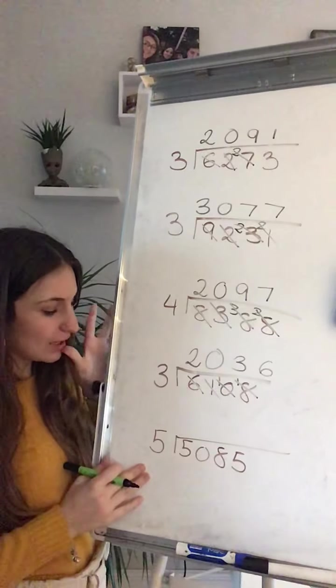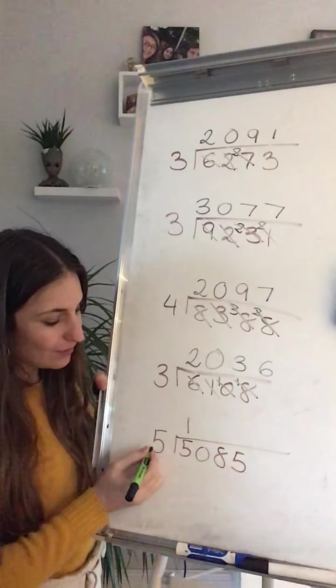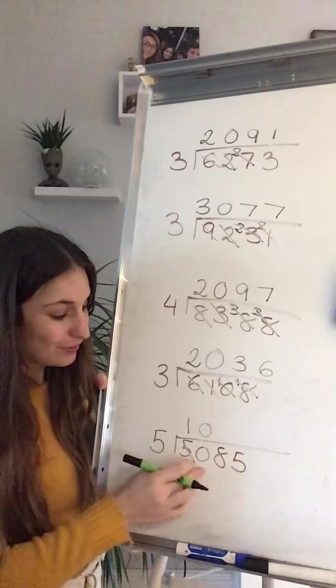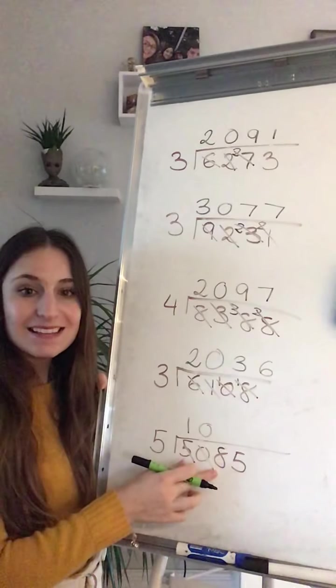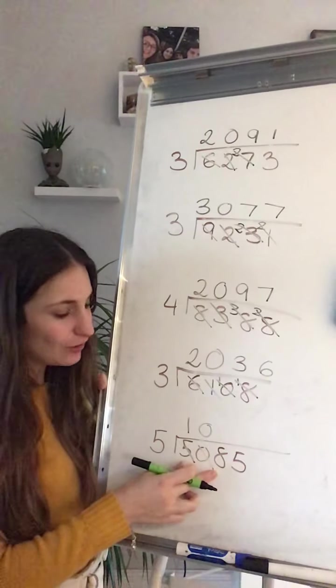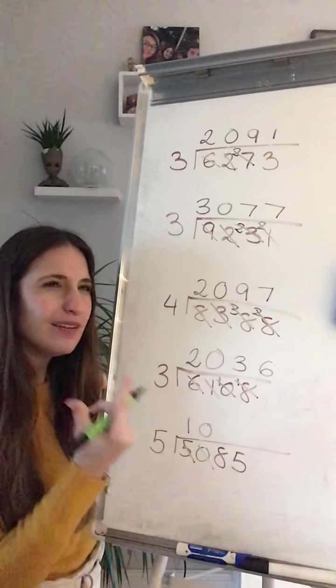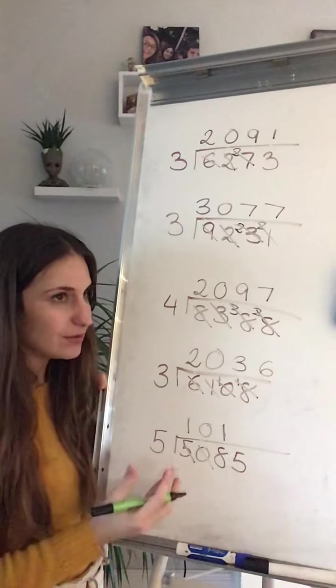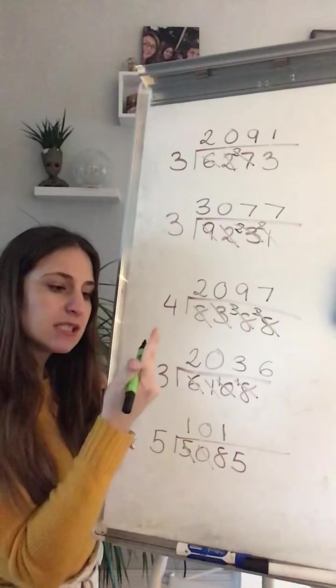Let's go for the last one. 1 times 5 is 5. I can get 0 by timing 0 times 5 is 0. 8. Can I get 8? No. The closer one is 5. 1 times 5 is 5. 6, 7, 8.